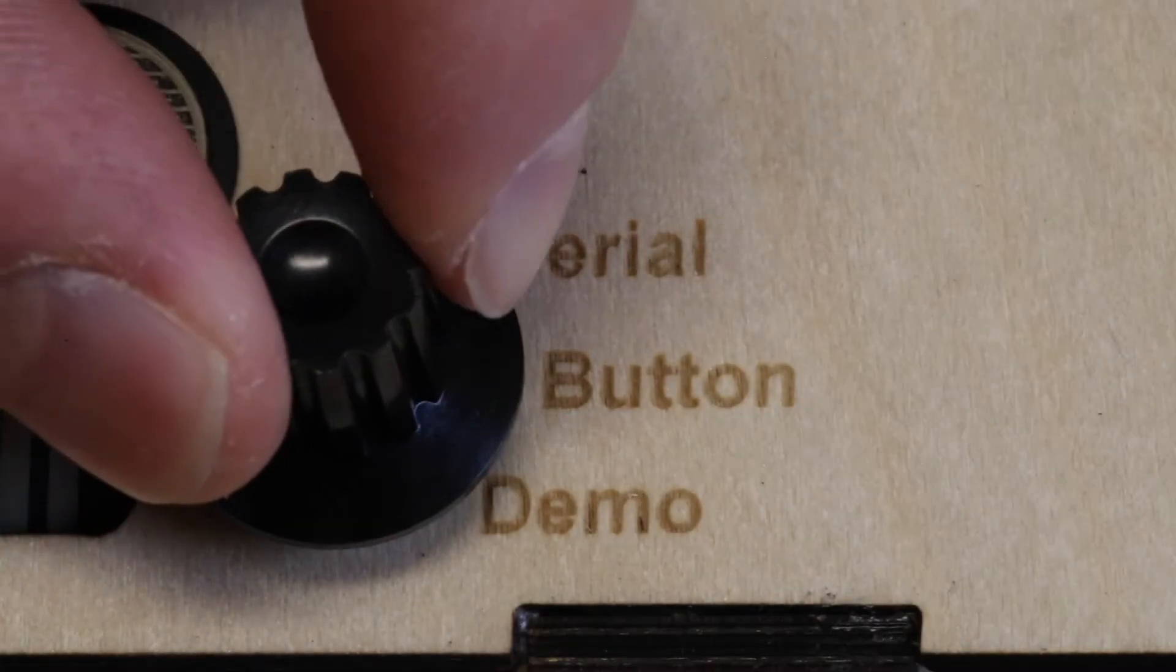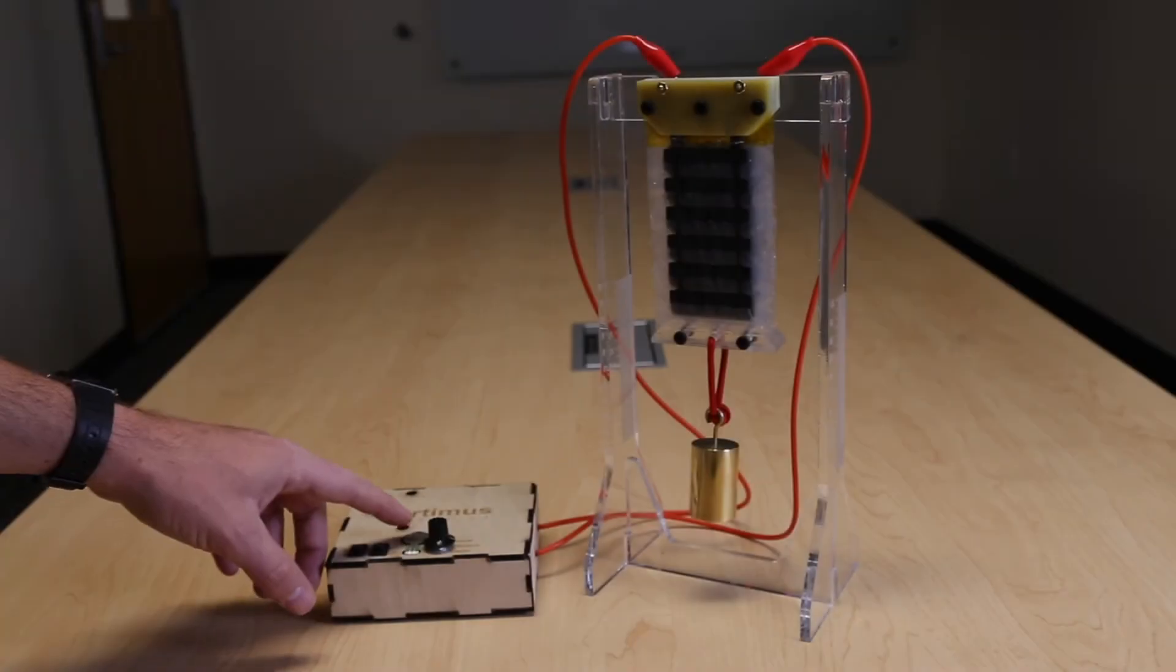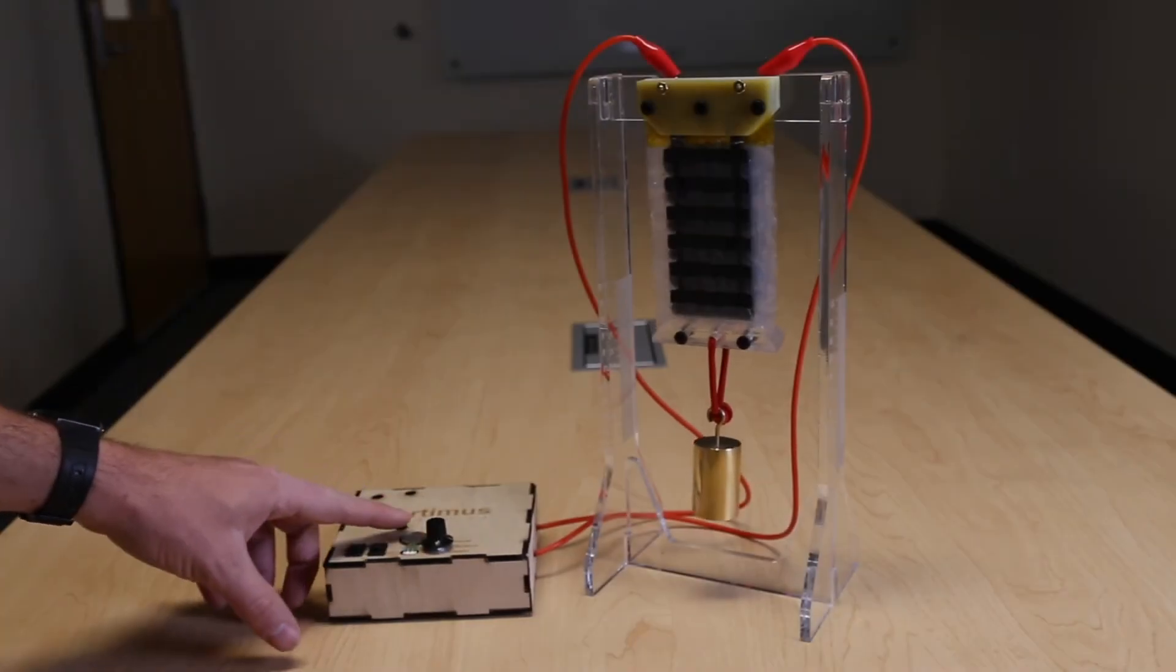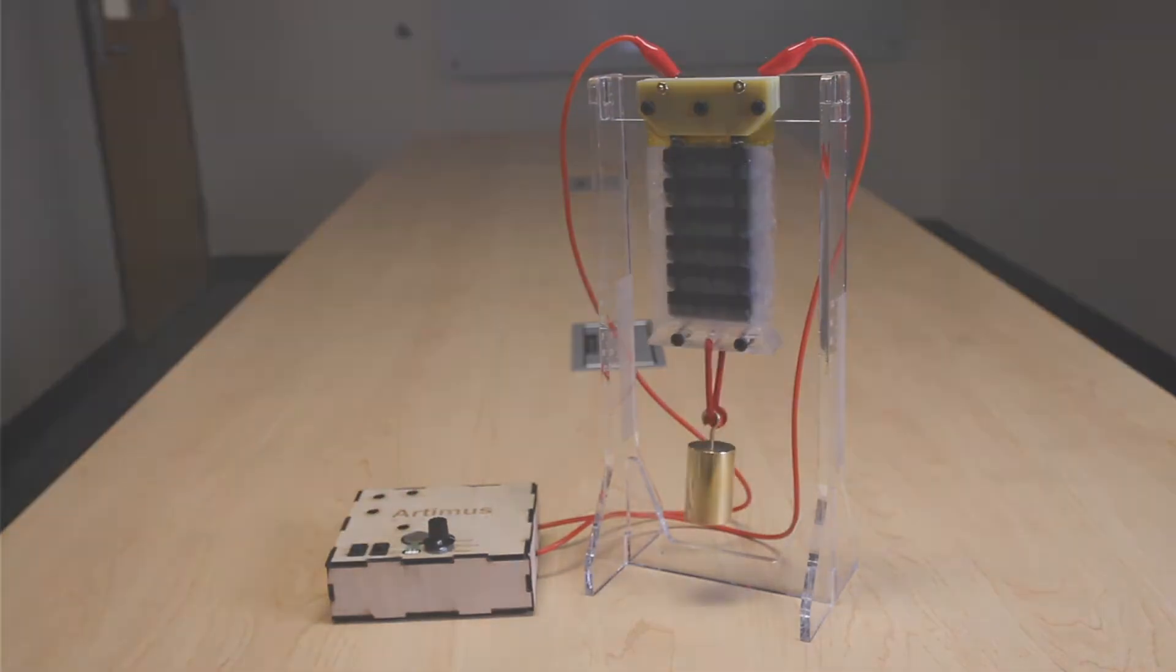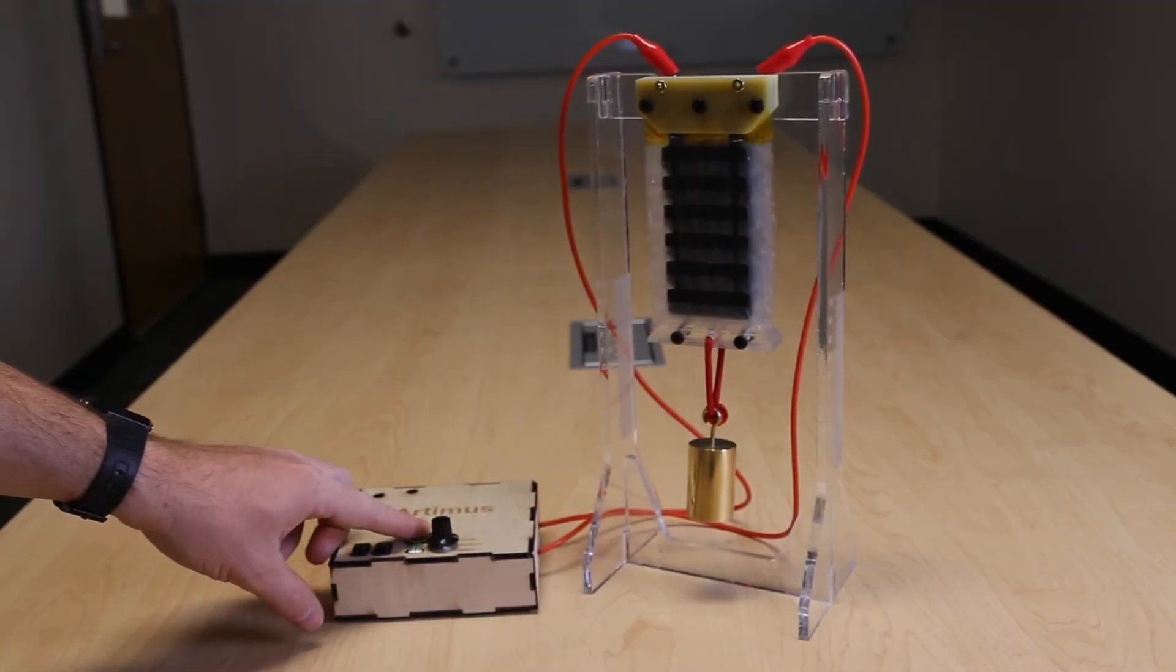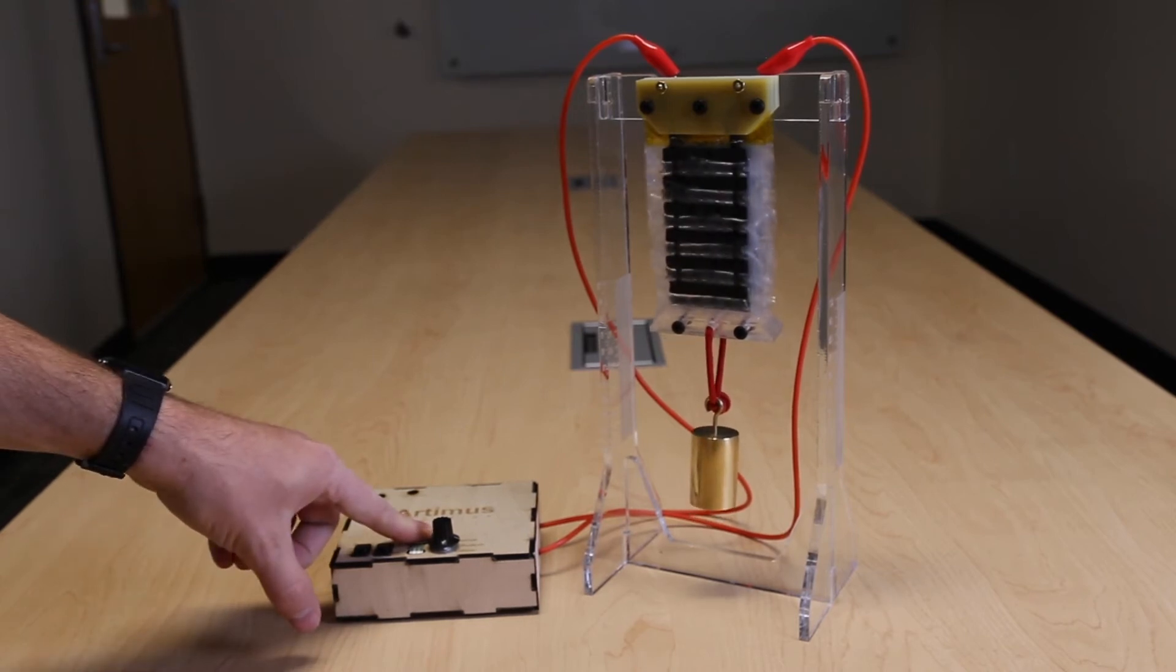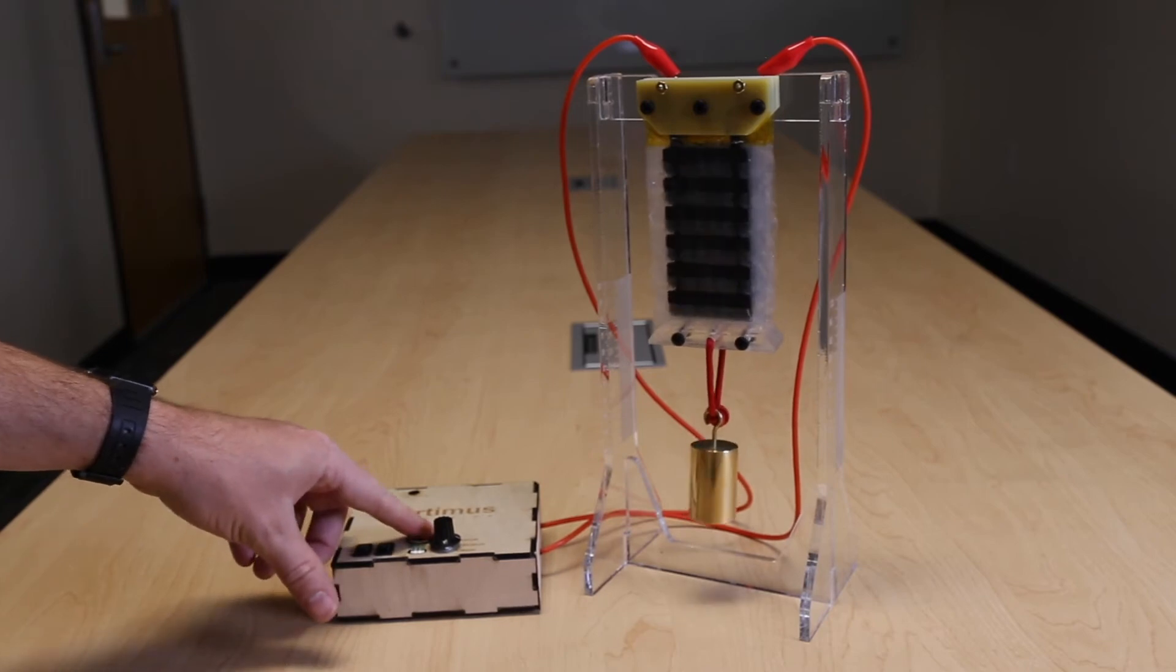For an initial demonstration, you can now set the program control knob to button mode. This enables the physical button located on top of the power supply to activate the Hazel Actuators. The button is pressure sensitive, meaning the harder you push, the higher the output voltage and the greater the amount of actuation. The button is great for quickly showing the capabilities of Hazel Actuators.